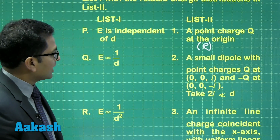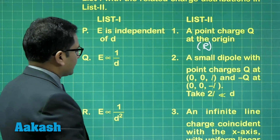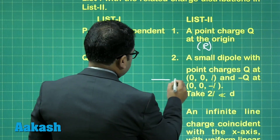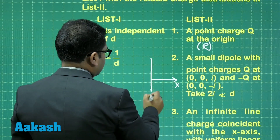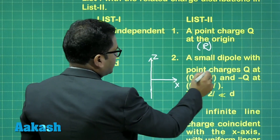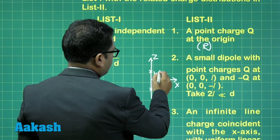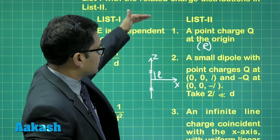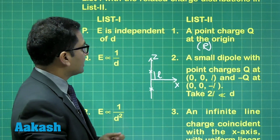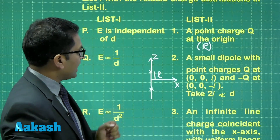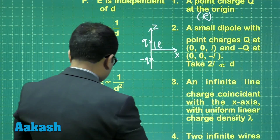Next, a small dipole with point charge Q at (0, 0, L). Let me show it: with the Z-axis vertical, the positive point charge is here and the negative point charge is here, separated by distance L. Since D is the distance along the Z-axis, the electric field due to this dipole must be calculated along the axial line. For axial electric field, it is inversely proportional to D³, which corresponds to option S.